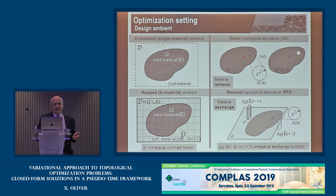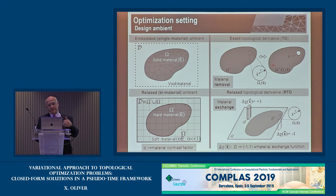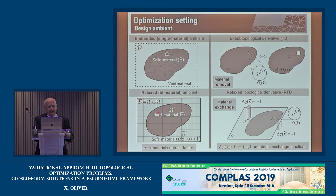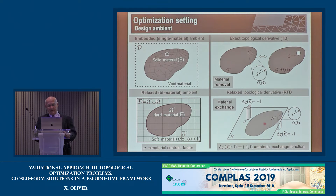In the single-material case, evaluating the sensitivity requires removing material from the solid and computing the change in the functional per unit of change — what is called the exact topological derivative. In the relaxed material setting, we can instead talk about material exchange: we consider what happens when a point in omega minus (soft material) is changed to hard material, or conversely a point in omega plus is changed to soft material. The characteristic function changes by +1 or -1 accordingly.